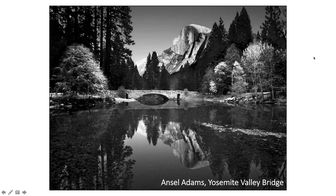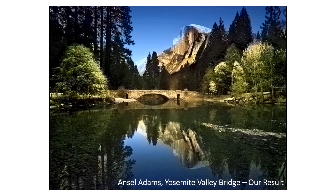This is joint work with Philip Isola and Alyosha Efros from UC Berkeley. Consider this iconic photograph of Yosemite Valley Bridge from Ansel Adams. How would it look like in color? This problem is very under-constrained, as we're looking to produce a three-dimensional signal from a one-dimensional signal. However, you and I have seen many color photos and have no trouble doing this. We know the sky is probably blue, the mountain is likely brown, and the vegetation is most definitely green. This problem clearly calls for the use of data, and we can use machine learning techniques to help solve it.